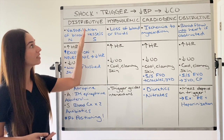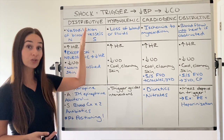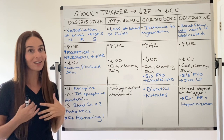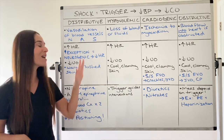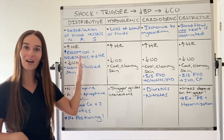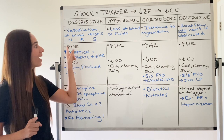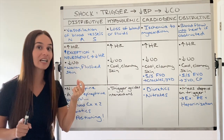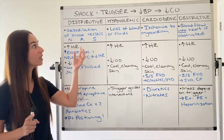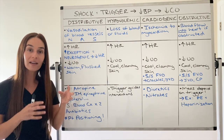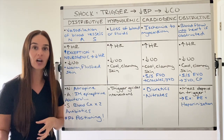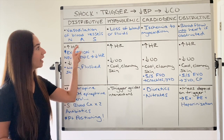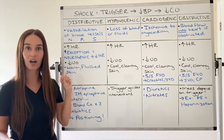I do want you to understand that distributive shock — I put a little acronym, NAS, one of my favorite rappers growing up. NAS stands for the three types within distributive shock: neurogenic, anaphylactic, and septic shock.